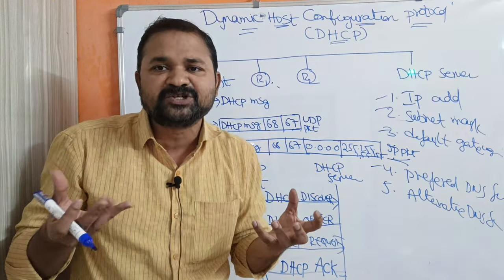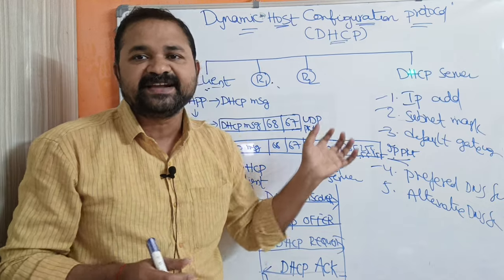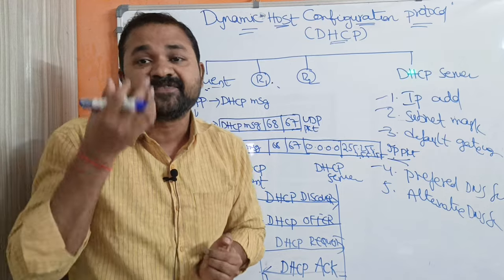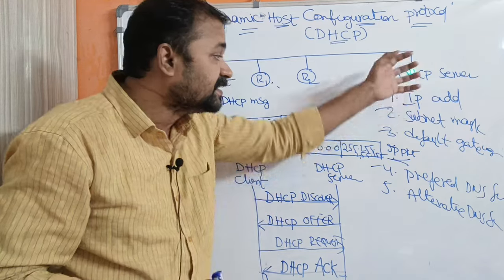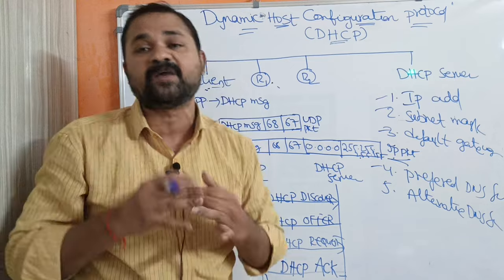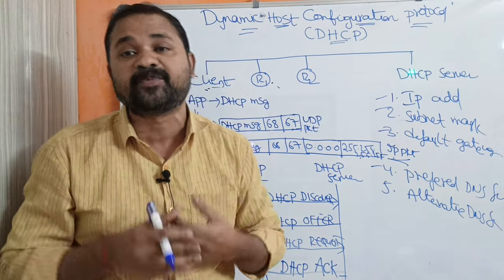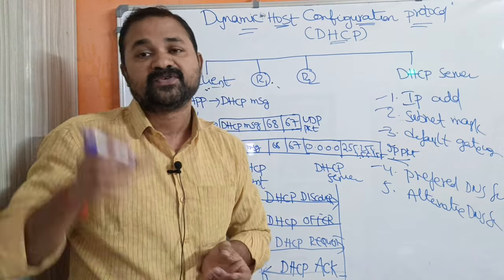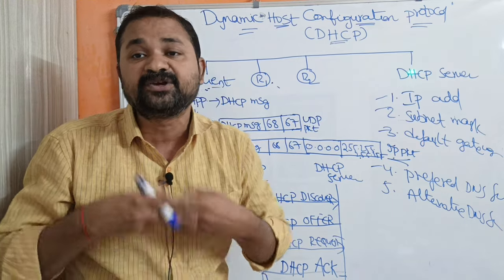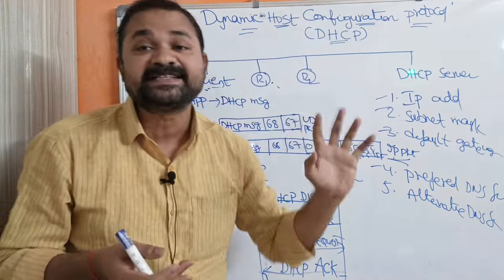Suppose we assume that it is a big organization which contains 10,000 computers. Then the network people have to enter these five details in all 10,000 computers — which is a very, very time-consuming process. So in order to overcome that problem and save time, we use the DHCP protocol.